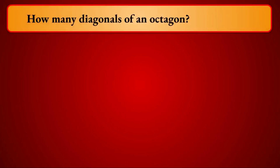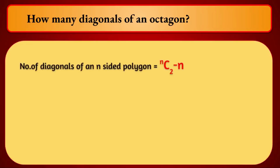Problem: How many diagonals does an octagon have? An octagon is an 8-sided polygon. Using the formula NC2 − n: 8C2 − 8 = 28 − 8 = 20 diagonals.